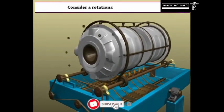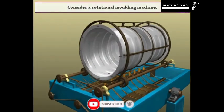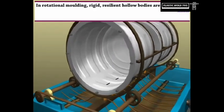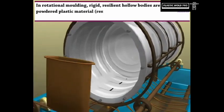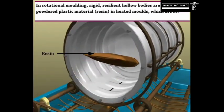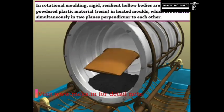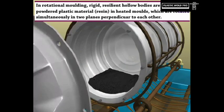Consider a rotational molding machine. In rotational molding, rigid, resilient hollow bodies are formed by powdered plastic resin in heated molds, which are rotated simultaneously in two planes perpendicular to each other.